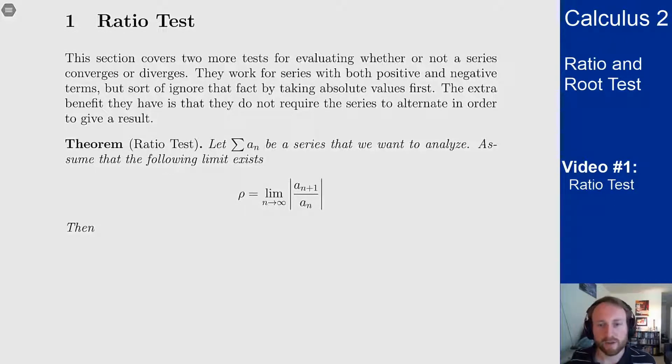We're going to call this limit rho. If it doesn't exist the test can't be applied and you're sort of out of luck at that point. But if it exists we can then talk about it. So we get this value rho as this limit and I want to know what does this mean about my series.